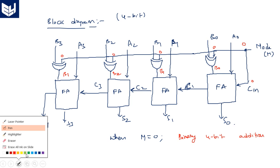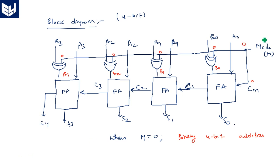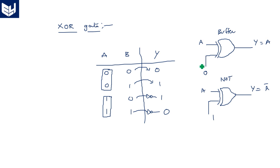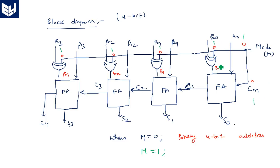When mode M is equal to 1, all XOR gates receive 1 on the mode input and carry Cin is also 1. When one input of an XOR gate is 1, it acts as an inverter. So the outputs become B0 bar, B1 bar, B2 bar, and B3 bar — all complements. With carry input equal to 1, the circuit performs binary 4-bit subtraction.